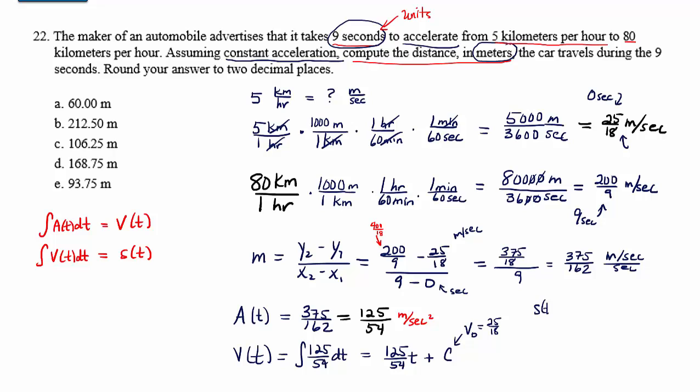So this will allow us to find the position function. So the position function s of t is going to be the antiderivative of 125 over 54 t plus 25 18 with respect to time. So integrating that, we have s of t is equal to, now using the power rule, we're going to say the antiderivative of t to the first is t squared over 2. Well, I'm going to bring that 2 into the denominator. So this is actually 125 over 108 t squared plus 25 18 t plus some constant c. But again, this is going to be the initial position. For the purposes of our exercise here, the initial position is zero. For our purposes, call that position zero. And we'll increase from there. So s of t then is really just 125 over 108 t squared plus 25 over 18 t.